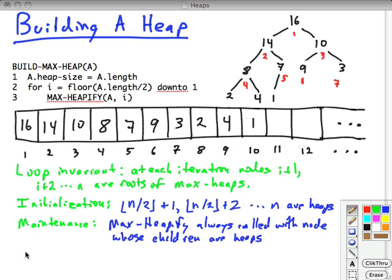Finally, the termination. The loop terminates when i equals 0. By the loop invariant that we've shown is initialized and maintained, everything from i equals 1 on up is the root of a max heap, including the node indexed by 1, which is the root of the tree. Therefore, the whole thing is a max heap.